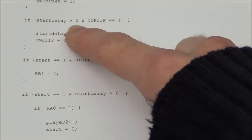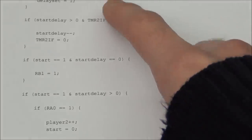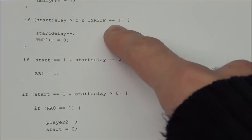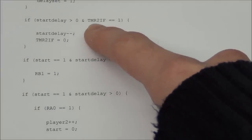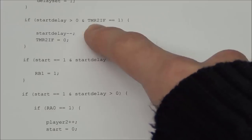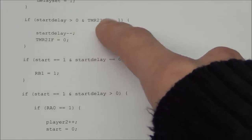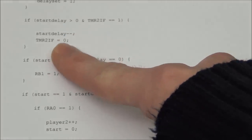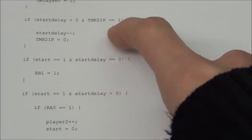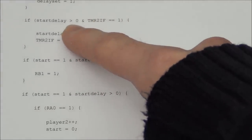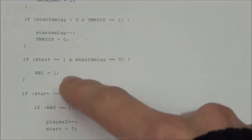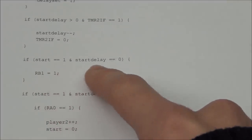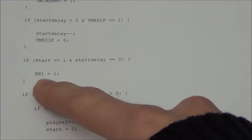And now we can see if start delay is greater than zero. And it is because we have just set it up here. And the timer 2 interrupt flag equals 1. That means that the timer 2 has run out. And it has started from zero again. If this is true then it will subtract 1 from the start delay and it will clear the timer 2 interrupt flag. And the code will actually just repeat itself until this is no longer greater than zero. And when this is no longer greater than zero that means it is zero. And then it will go into this if statement. And it will turn on the LED. The start LED.